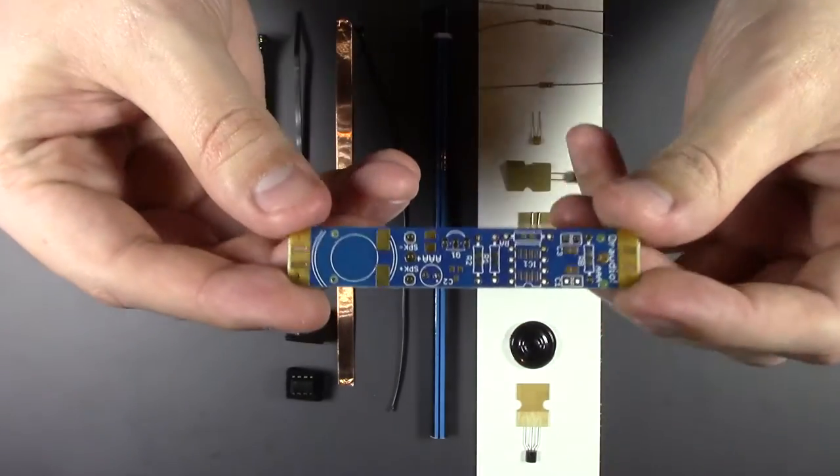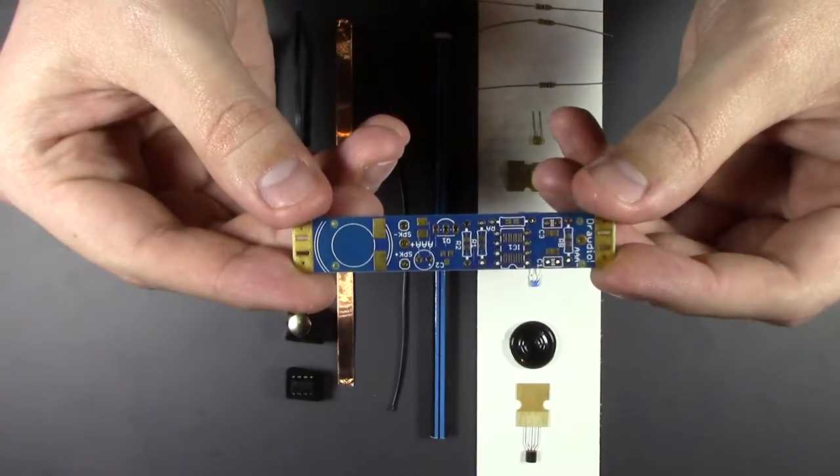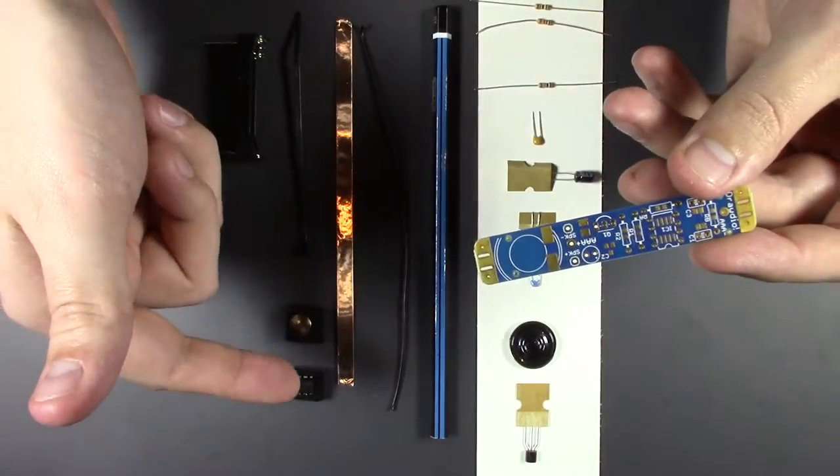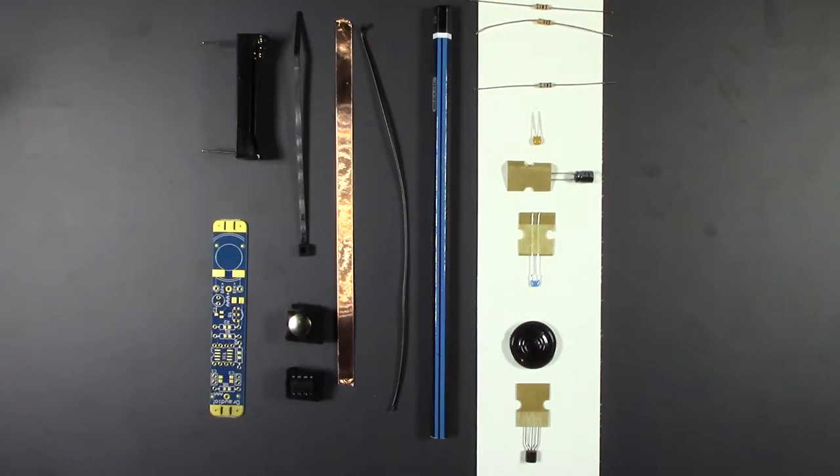It's a super easy build. All you have to do is put the components in the little PCB there. All you need is just a little bit of soldering, and then the rest of the pieces just go into the pencil and you're good to go. So let's get the soldering iron in here and get started.